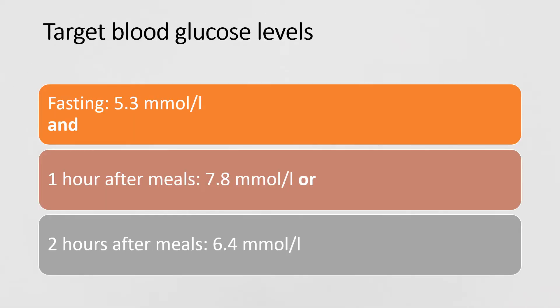Target blood glucose levels: fasting 5.3 mmol/L, and one hour after meals 7.8 mmol/L OR two hours after meals 6.4 mmol/L. Again, very important — pay close attention to the 'and' and 'or' in these figures, as exam questions have been designed around this distinction.